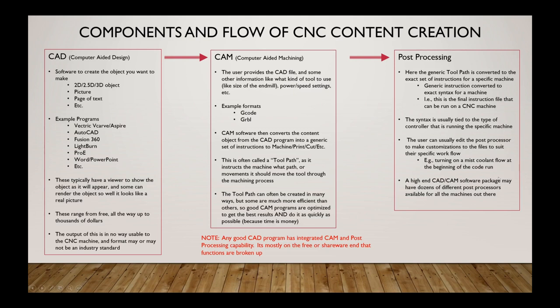Most high-end programs like Fusion 360, AutoCAD, Pro/E, and Vectric VCarve and Aspire have CAD and CAM built into the same program. They also come with many post processors, and if they don't support your specific machine, you can usually pick one and modify it yourself. They often document how the post processor should be written so you can make it work for your tools — for example, Vectric has a post processor manual telling you how to create your own. That's the first stage, and coming out of post-processing, you have a file you can load on your CNC machine and run.